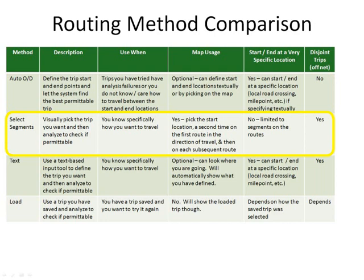The next option is select segments. The select segments option allows you to specify a trip you want to take and then ask the system if it is okay. The trip is defined by picking on the map. You must pick where you want to start and then pick a second time on that first route so the system knows what direction you want to travel. You then need to pick a minimum of one time on each subsequent route in the trip, though you can make as many picks as you want.